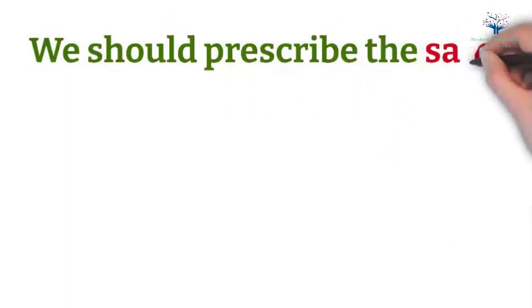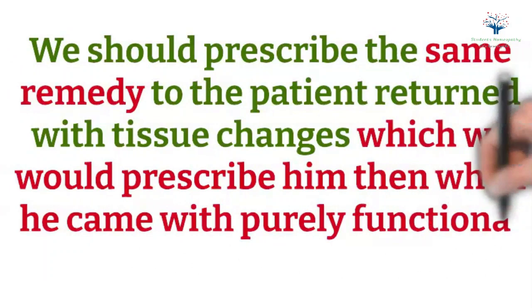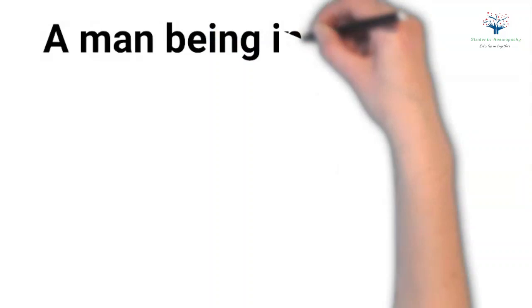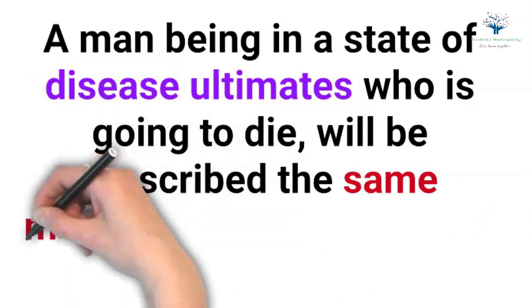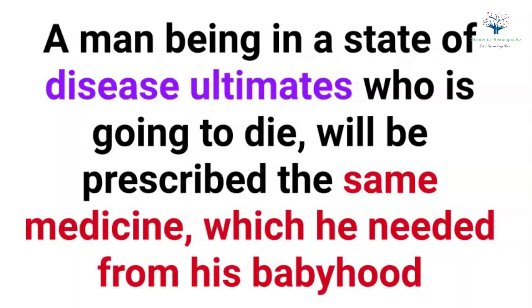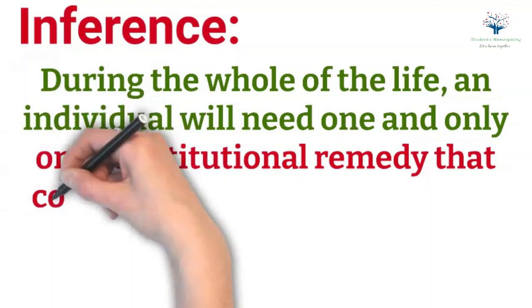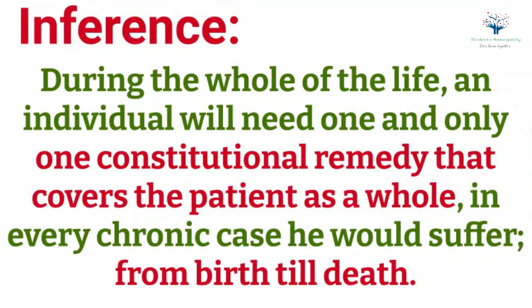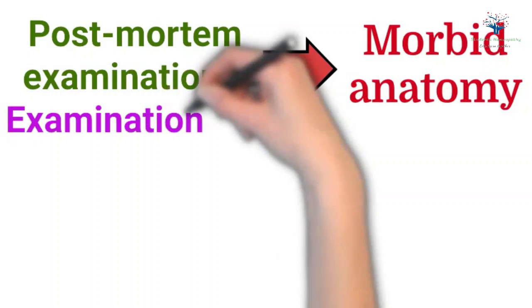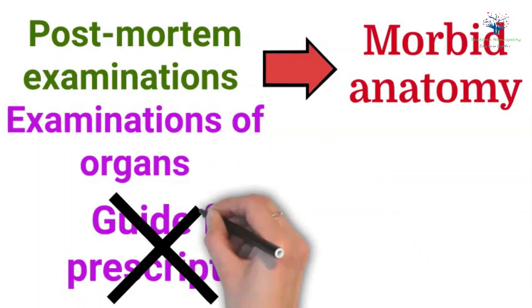According to Kent, we should prescribe the same remedy to the patient who returned with tissue changes which we would have prescribed when he came with purely functional problems. Thus, a man being in a state of disease ultimates who is going to die will be prescribed the same medicine which he needed from his babyhood. We can infer that during the whole of life, an individual will need one and only constitutional remedy that covers the patient as a whole. In every chronic case, he would suffer from birth till death. However, the physician should be thoroughly acquainted with tissue changes — morbid anatomy from post-mortem examination and examination of organs — not as a guide for prescription, but for the purpose of diagnosis and prognosis.